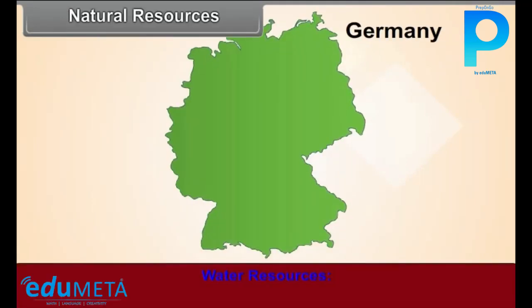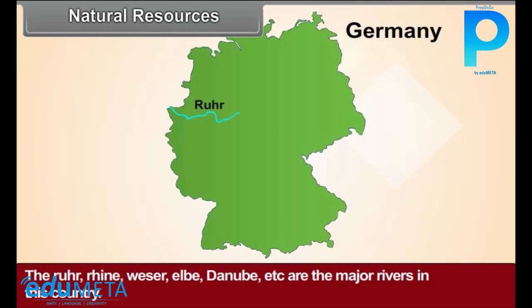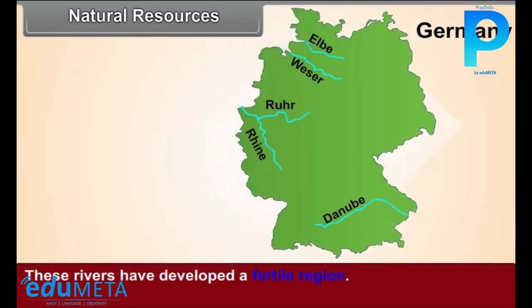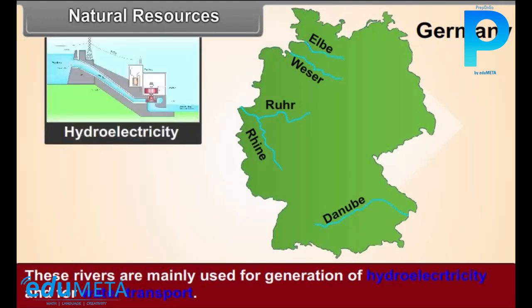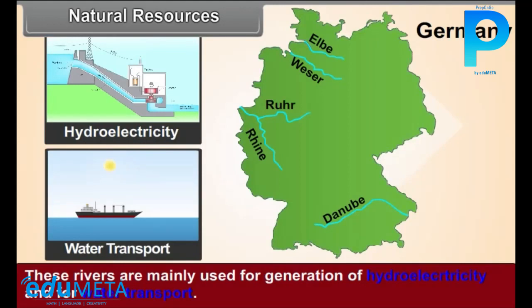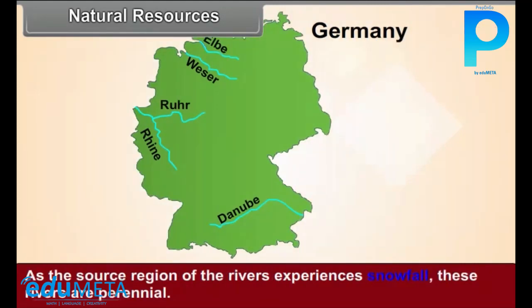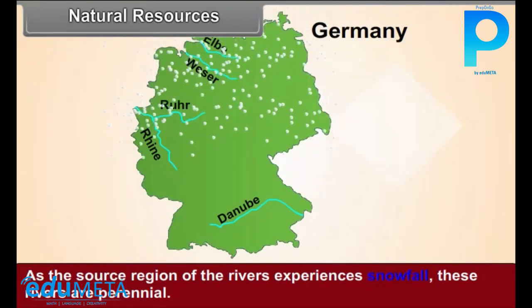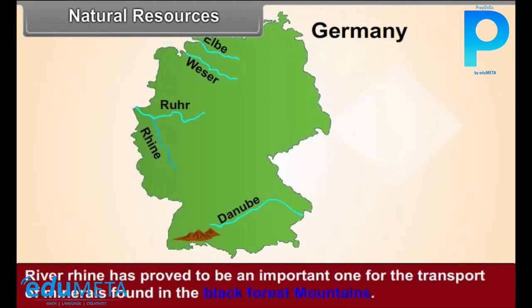Natural Resources – Water Resources. The Ruhr, Rhine, Weser, Elbe, Danube, etc. are the major rivers in this country. These rivers have developed a fertile region and are mainly used for generation of hydroelectricity and water transport. As the source region of the rivers experiences snowfall, these rivers are perennial. River Rhine has proved to be an important one for the transport of minerals found in the Black Forest Mountains.